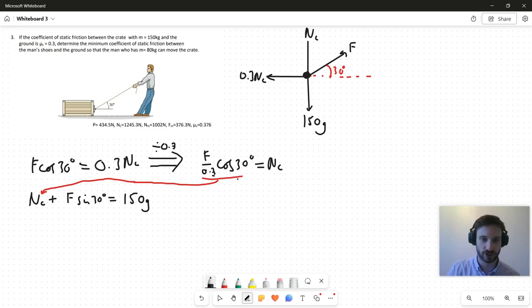We can see that this Nc term would just transform into this term here, this F over 0.3. I'm going to do two steps in one and I'm going to factorize for F. So let's say this left hand side is equal to F times cos 30 over 0.3 plus sin 30.